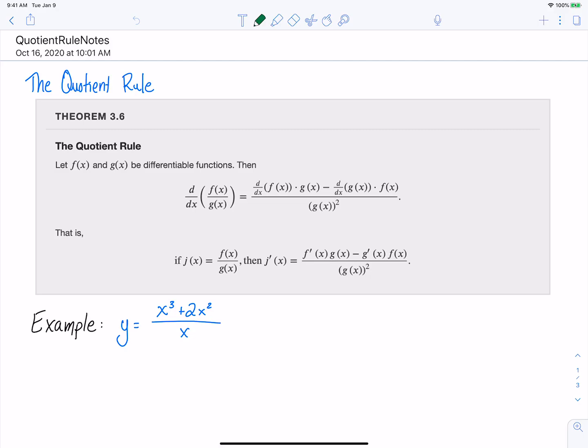And just like with the product rule, sadly the derivative of two functions being divided is not just the derivative of the function on the top and derivative of the function on the bottom. So again, we've got theorem 3.6 here, and this is from our OpenStax book. And we've got this Leibniz notation here, that's the notation with all the d and dx's, which is okay.